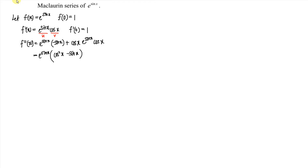We substitute x = 0 into the second derivative expression. e^0 equals 1. cos²(0) equals 1 and sin(0) equals 0, so 1 squared minus 0 gives 1. Thus 1 times 1 still equals 1, so f''(0) = 1.